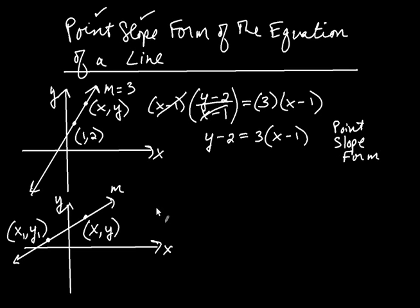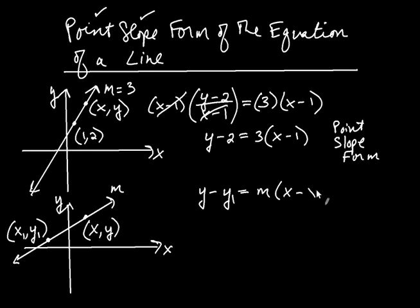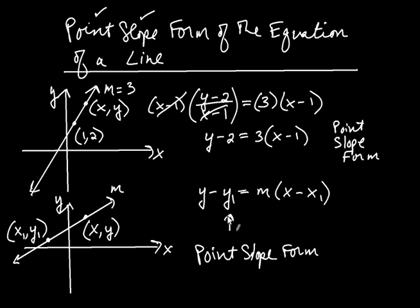When I go to create the point-slope form, it's going to be y — the general y — take away the y-coordinate of the point you have on the line, that's y1, equals your slope m multiplied by x take away the x-coordinate of the point you're given, which is x1. This is the general point-slope form of the equation of a line. Whenever you use this form, all you have to do is fill in y1, m, and x1. The x and y don't change — they remain x and y when you're finished.